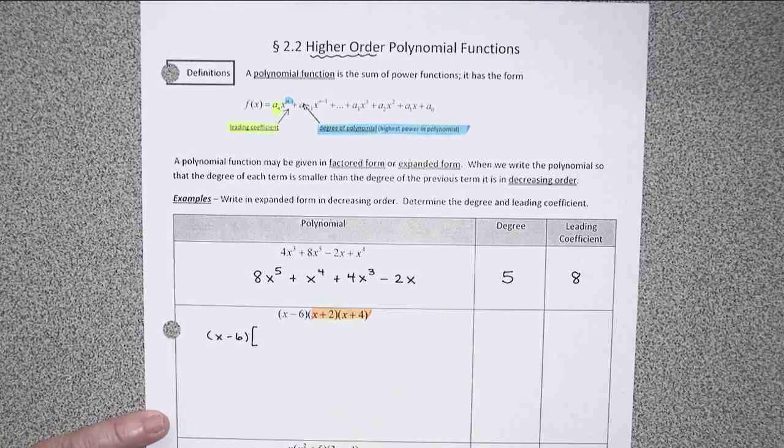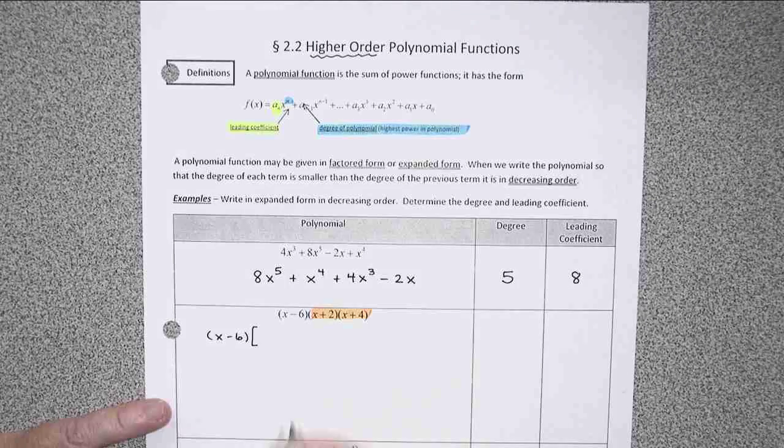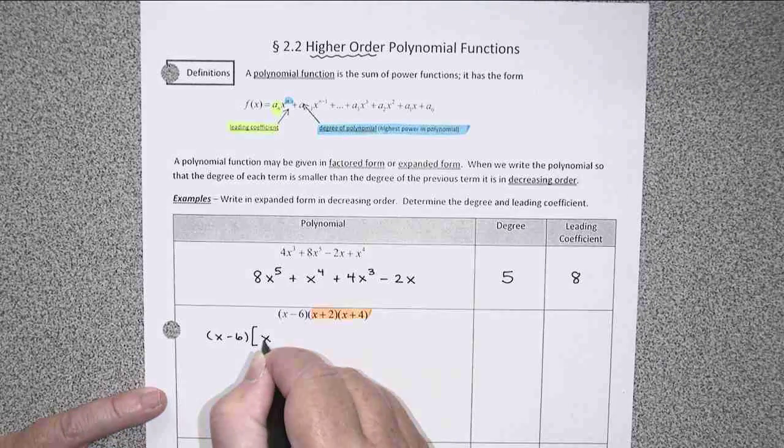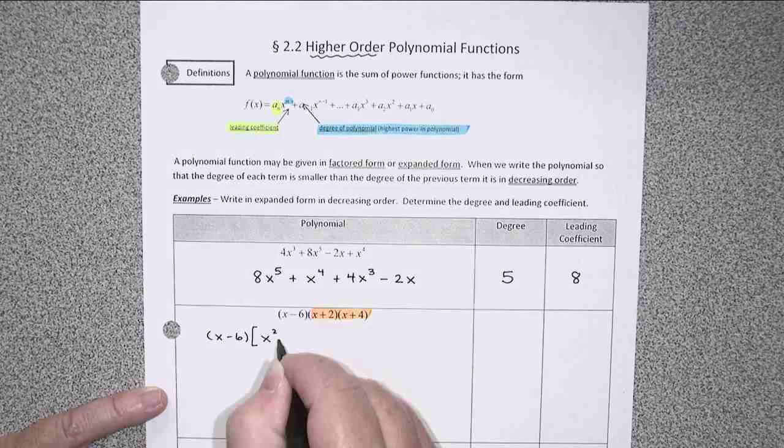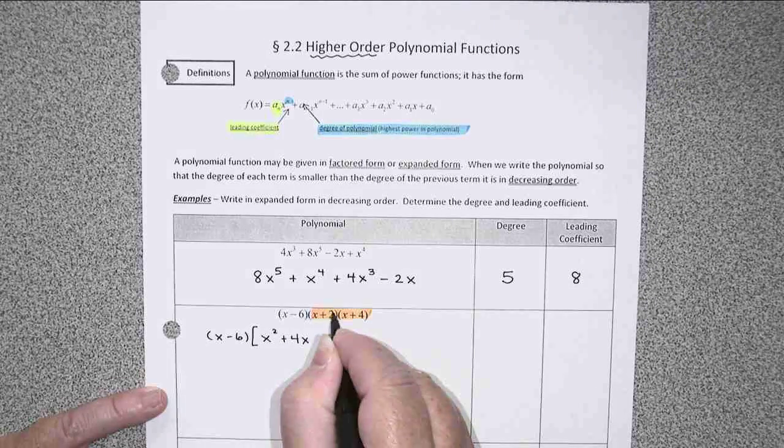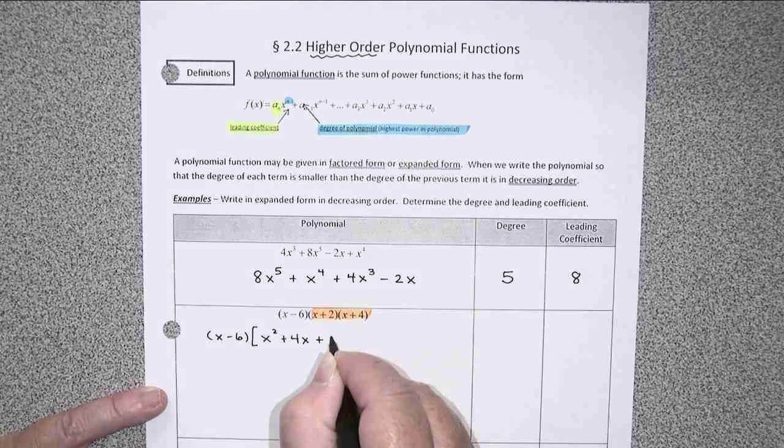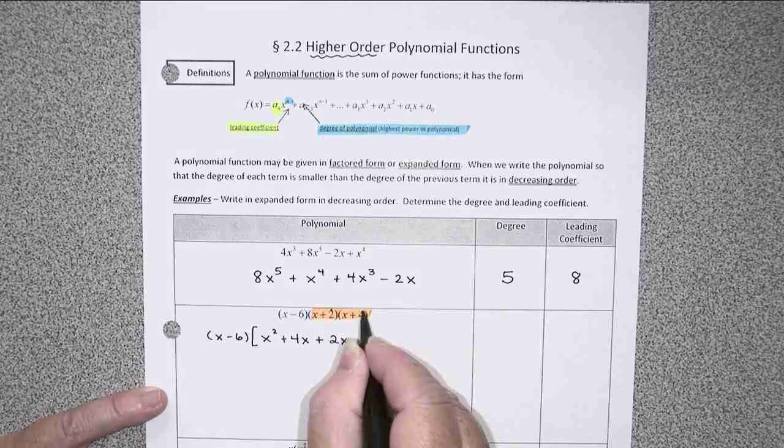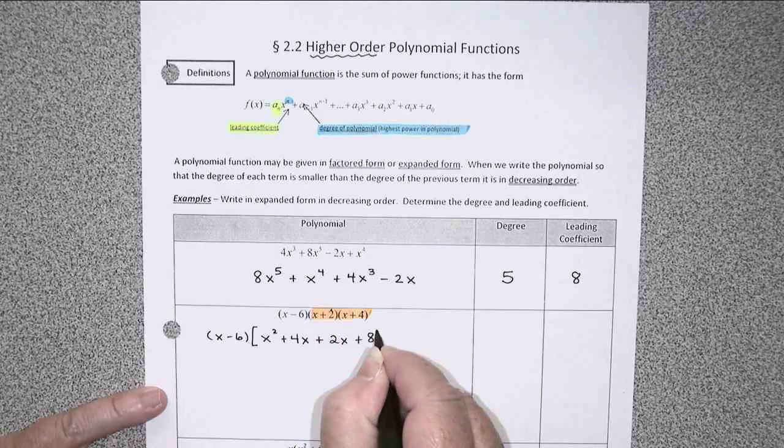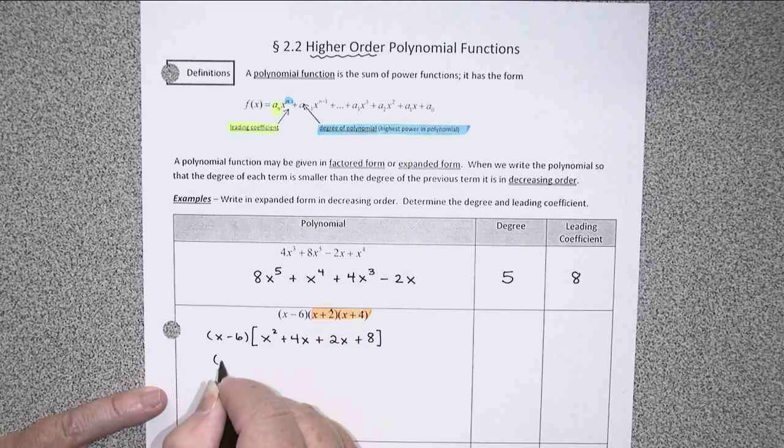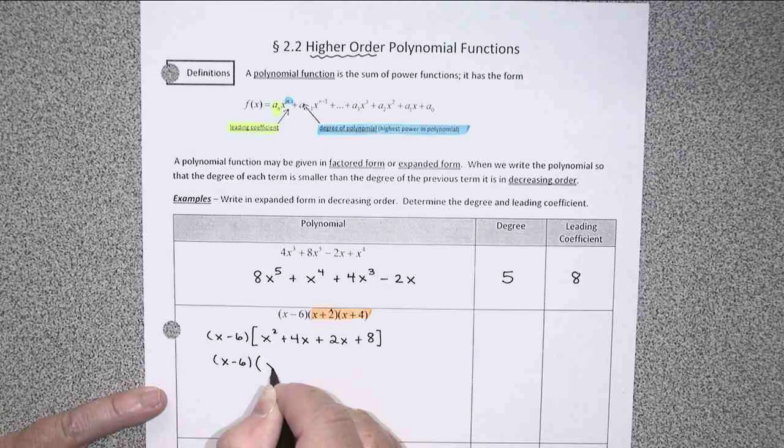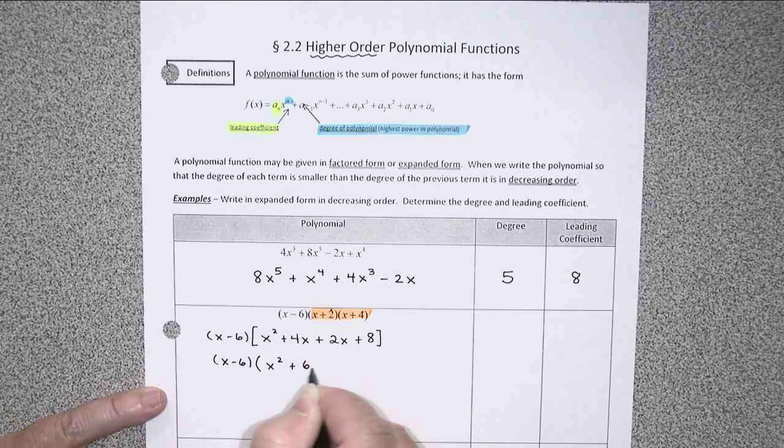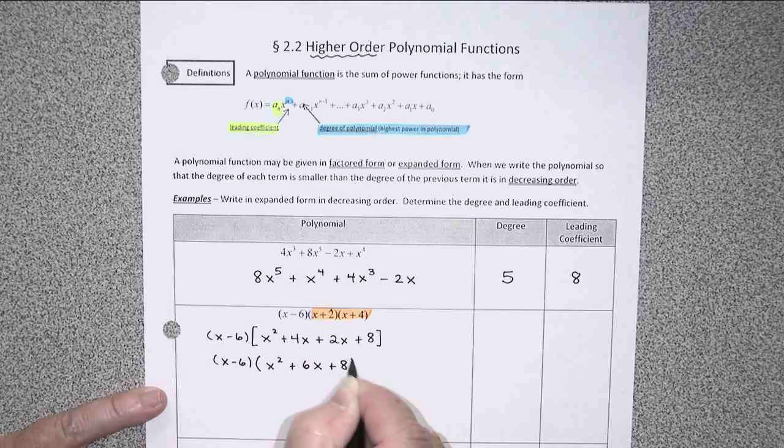That's just a double distributive law, or FOIL, if you like to use that acronym. We'd get x squared plus 4x plus 2x, and then the last would give me plus 8. Or if I combine my like terms in here, x squared plus 6x plus 8.